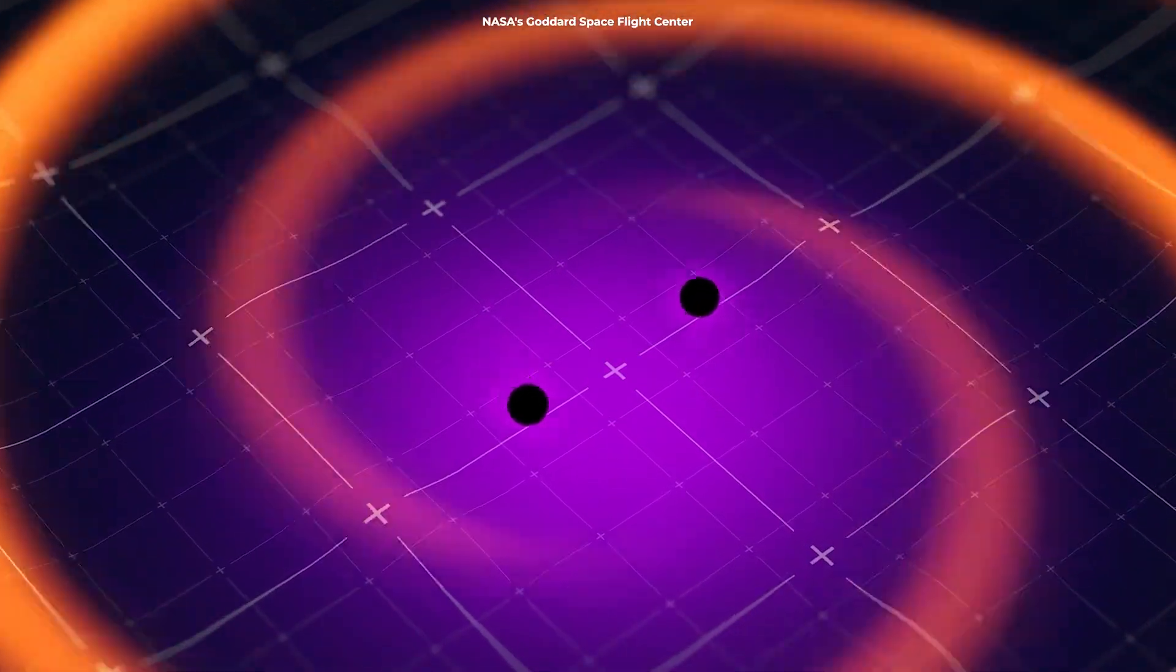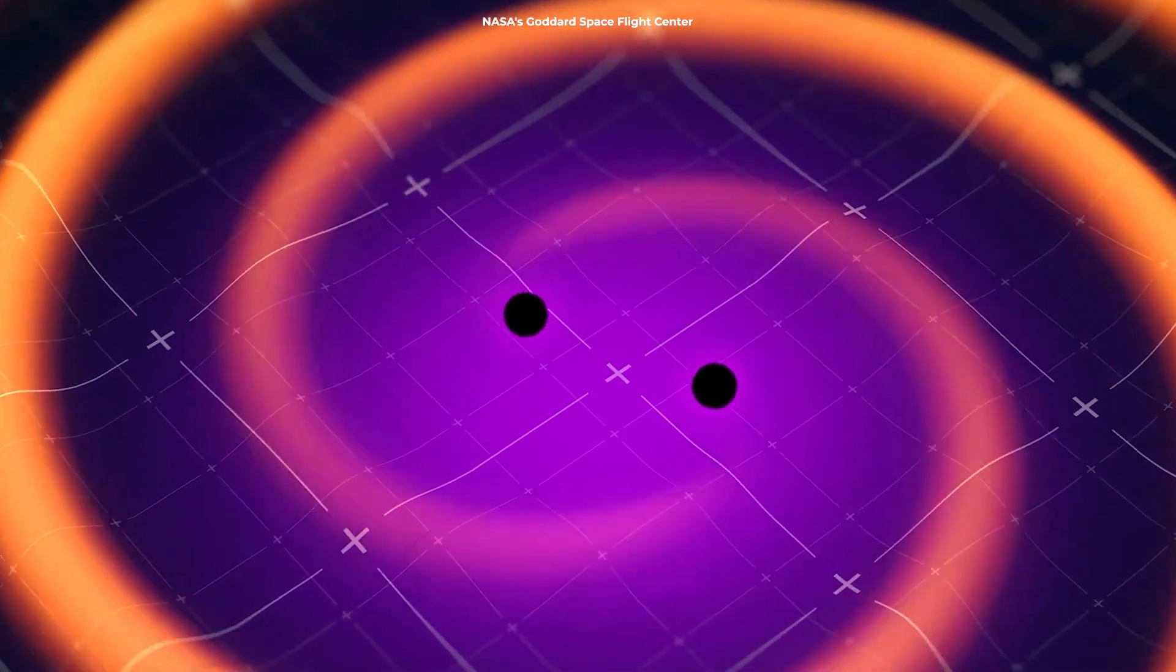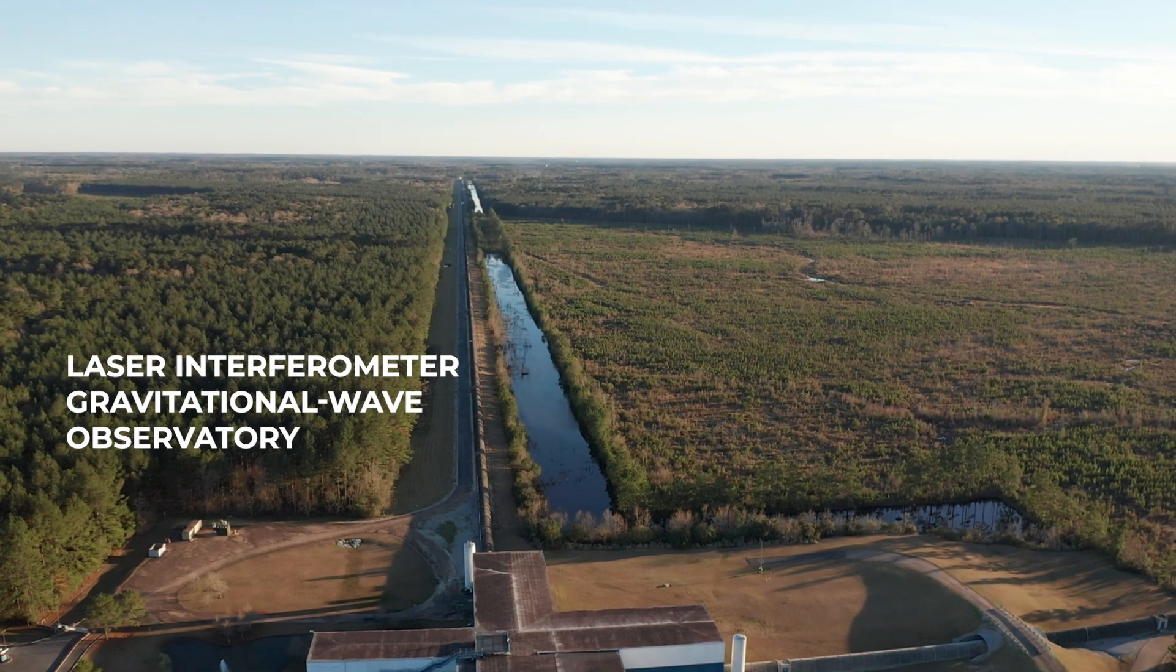They produce gravitational waves, ripples in the fabric of space-time that can be detected by observatories like LIGO and Virgo.